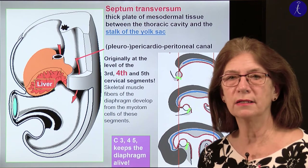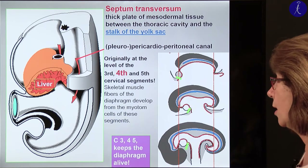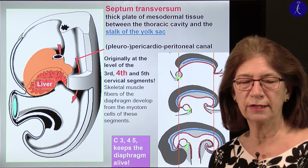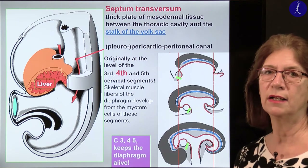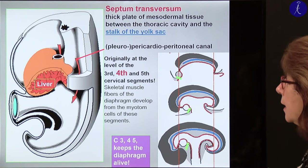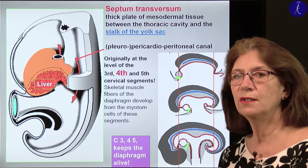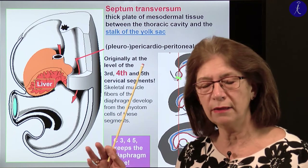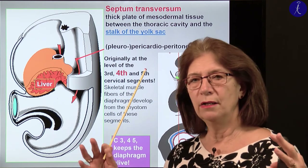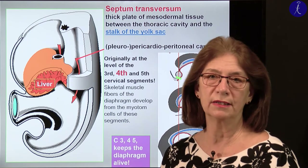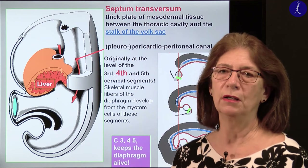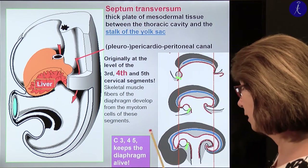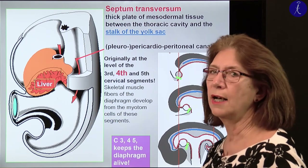Now how do these body cavities get separated? A major structure will be the septum transversum — a thick mesodermal tissue between the thoracic cavity and the stalk of the yolk sac. That's the septum transversum, and it's the major analogue for the diaphragm. Thinking about liver development and venous development, the septum transversum also relates to the connective tissue elements of the liver, and the vitelline veins and umbilical veins in this territory will give the sinusoids of the liver. So the septum transversum has more than one role — also in the formation of the sinuses of the liver.